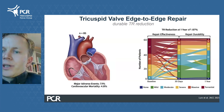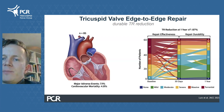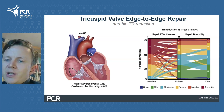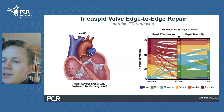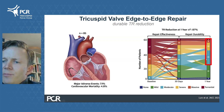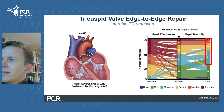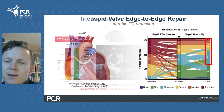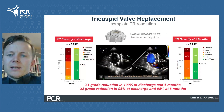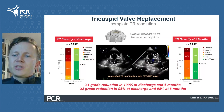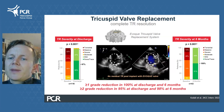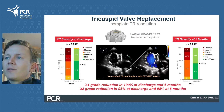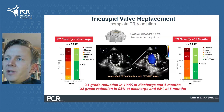This holds true also in clinical studies, where TR can effectively be reduced in almost 90 percent of patients with a durable effect. But please focus on the right side of the slide, where you can appreciate the substantial number of patients left with more than mild tricuspid regurgitation. This might be different for interventional tricuspid replacement, where you get a complete resolution of TR in virtually every patient.